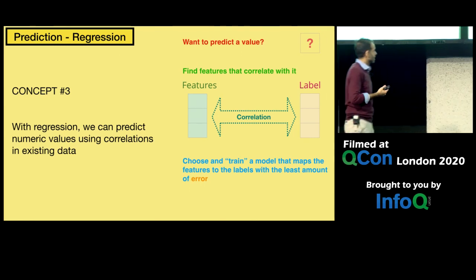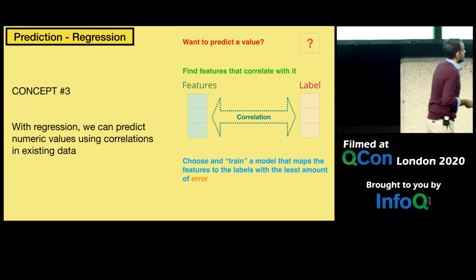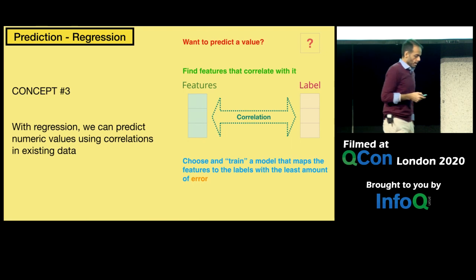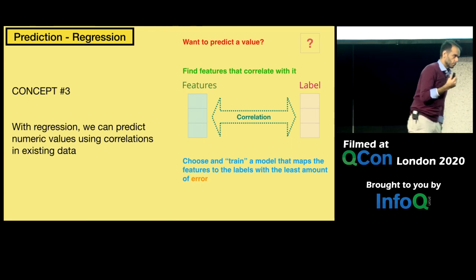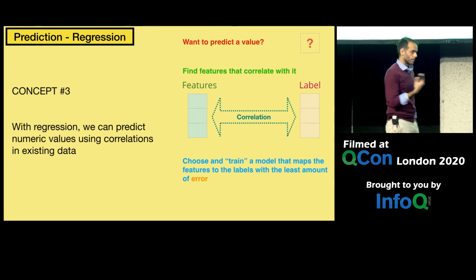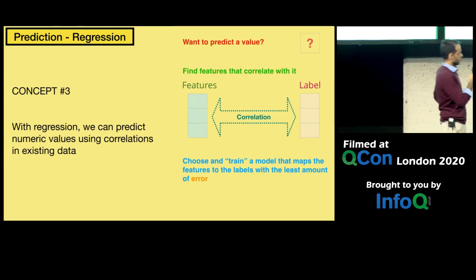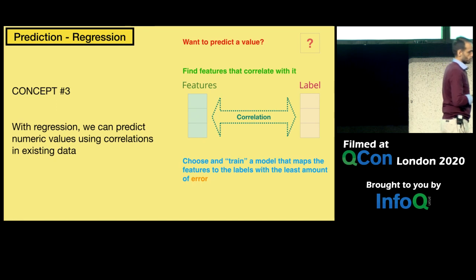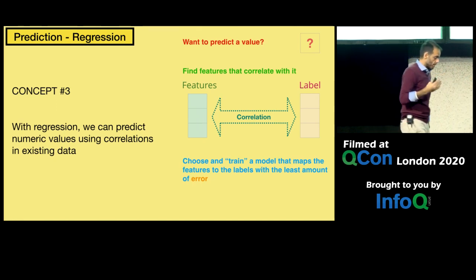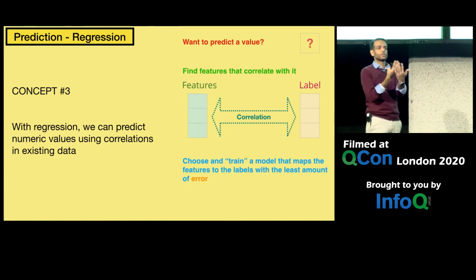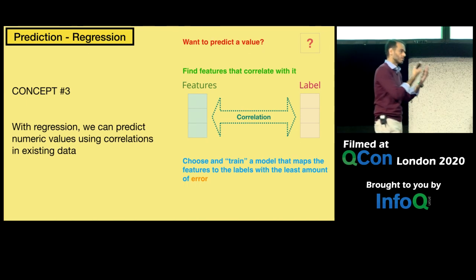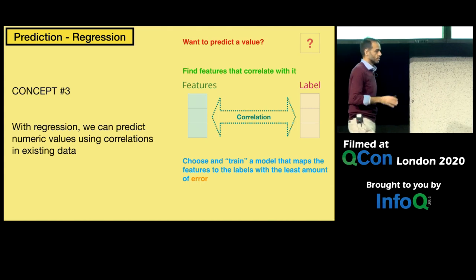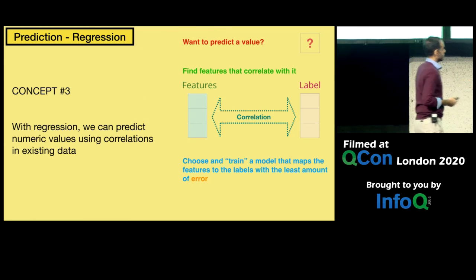With regression, we can predict numeric values using correlations in the existing data. The algorithm, thinking as a software engineer, goes: do you want to predict a value? Find features that are correlated with it. Then choose and train a model that maps the features to the labels with the least amount of error. Notice the emphasis is on correlation — we never talk about causation. All of machine learning at this moment is just about correlations between features and labels.